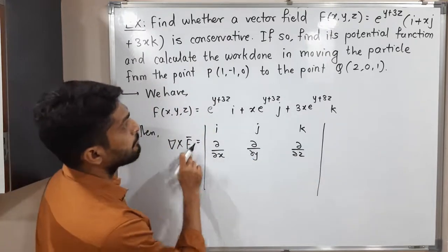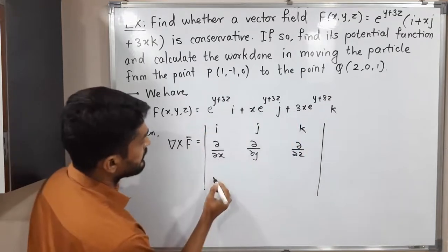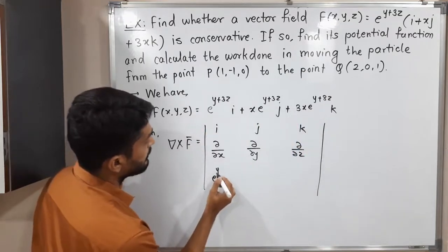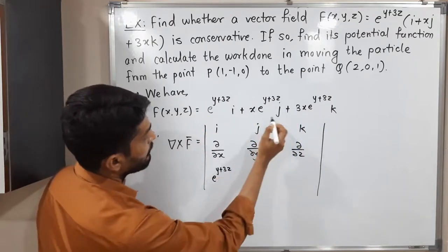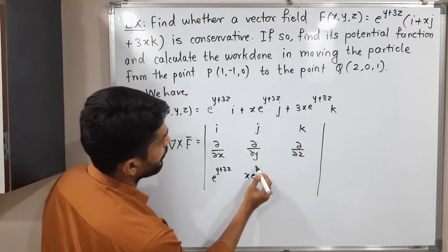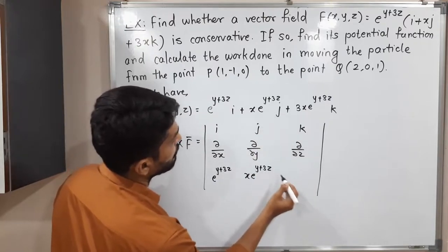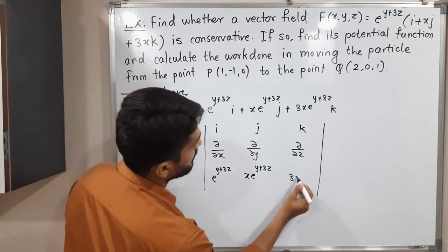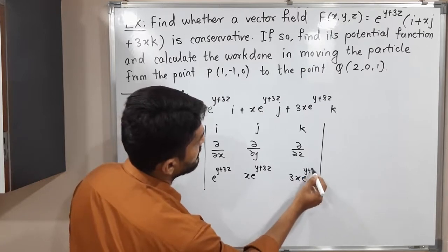The next row is F̄. The component of i is e^(y+3z), the component of j is x·e^(y+3z), and the last component is 3x·e^(y+3z).